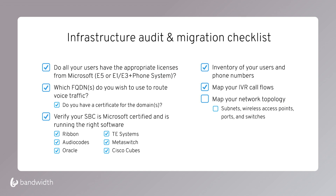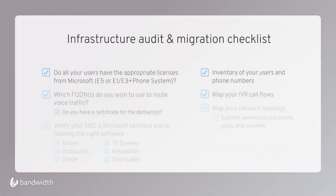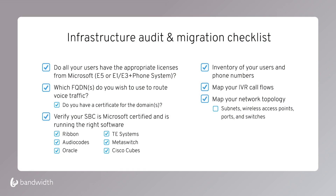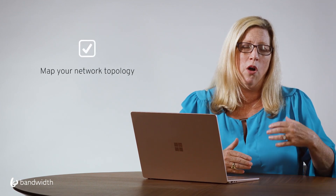Think about your IVR, because you're now going to be mapping that out and programming it in Microsoft Teams. Make sure you have your call recordings and voicemail recordings, and know how you want calls to flow when they come into your business. The last piece of the infrastructure audit is your network topology, which is really critical for 9-1-1 emergency calling.